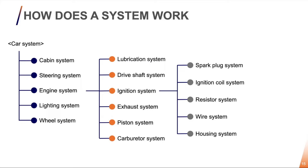Please notice here that because we have created a tree-like structure of our system, we have created an unambiguous way to identify our component. There's only one way to get to the wire system. But people might still disagree on what to call things — is it a wire system or is it an electrical transfer system? However, what people do agree on is the function of the system, the definition of it. For example: an object for the transfer of electrical energy through a wire.